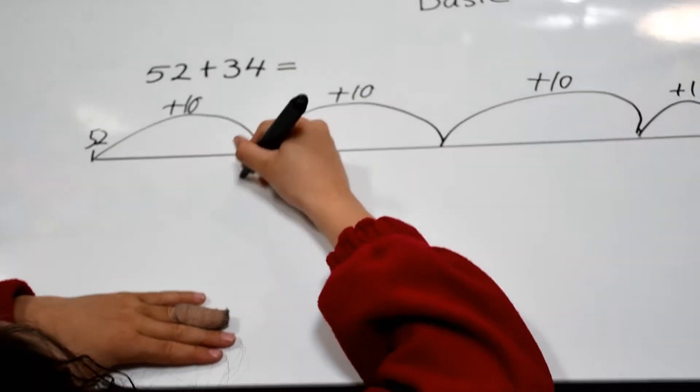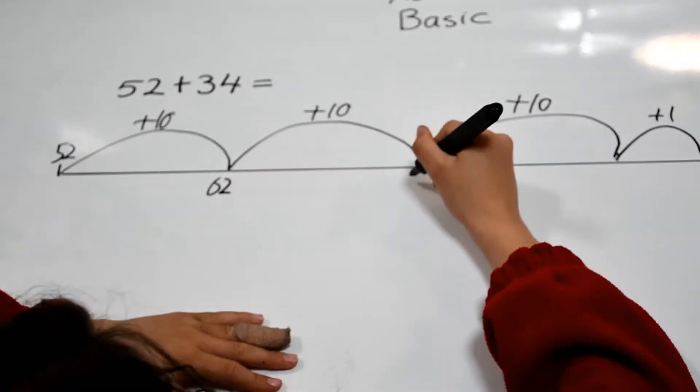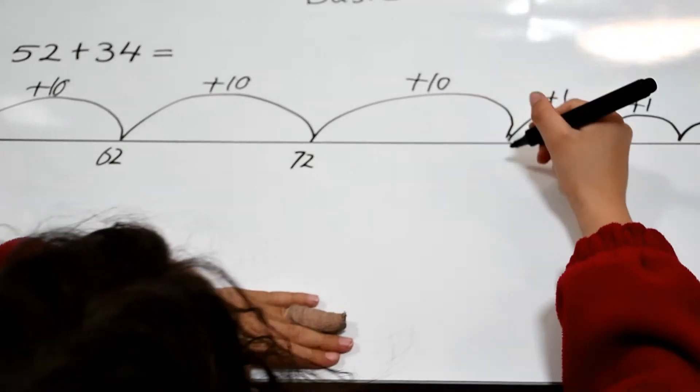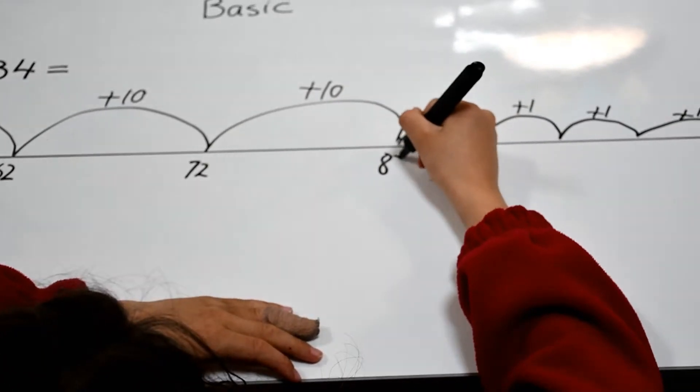52 plus 10 is 62. 62 plus 10 is 72. And 72 plus 10 is 82.